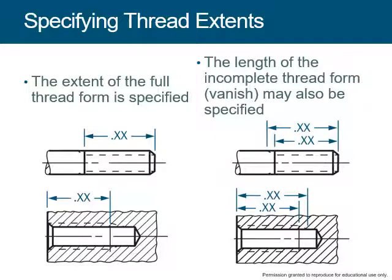For dimensioning a thread, you can dimension up to two ways: the actual useful thread size — up to the engaged edge — but you might also want to specify the full thread length if you don't want the unuseful thread to go a long distance. The most common is the useful thread length, which is where you get full engagement on the nut.